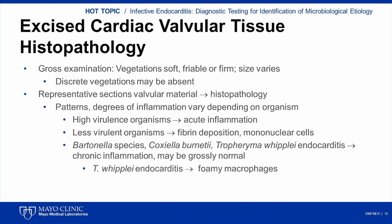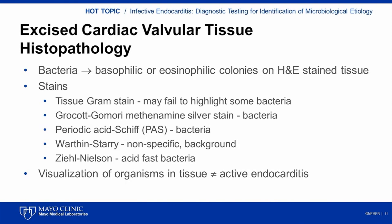Abundant foamy macrophages are the primary finding in Tropheryma whipplei endocarditis. Macrophages may also be found in Coxiella burnetii endocarditis, although the infiltration is typically less pronounced than with Tropheryma whipplei infection, and the inflammatory response may be mistaken for degenerative changes. Histopathologically, Bartonella endocarditis typically shows marked fibrosis with minimal vegetation formation, in addition to macrophage and lymphocyte infiltration. Bacteria may be apparent as basophilic or eosinophilic colonies on hematoxylin and eosin-stained tissue. Not all bacteria are readily detectable in hematoxylin and eosin-stained tissue, however, and it is common practice to evaluate a panel of stains when endocarditis is suspected, including Gram and Grocott-Gomori methenamine silver stains.